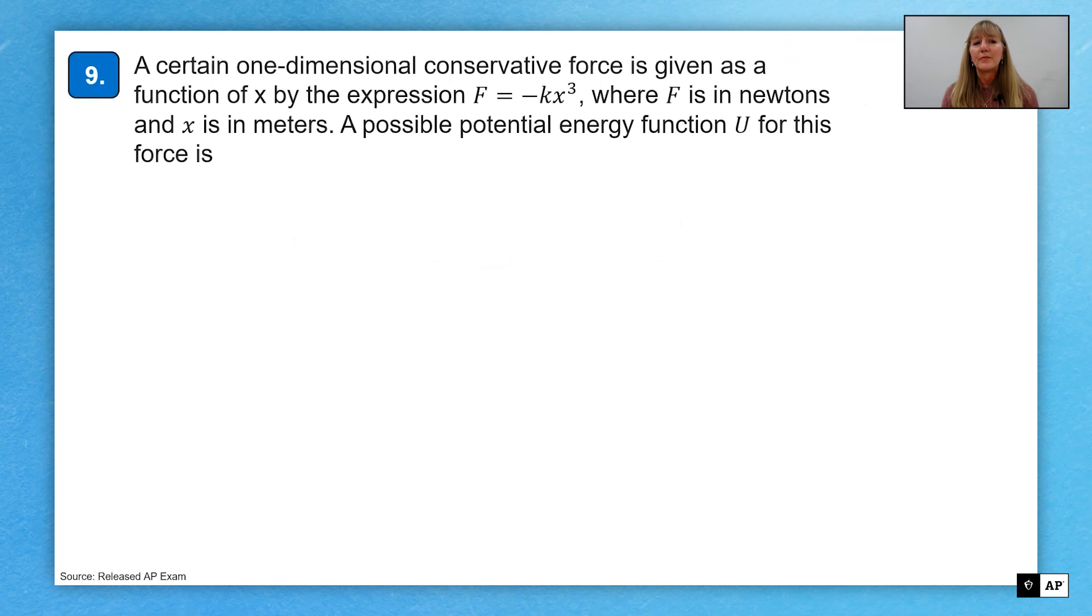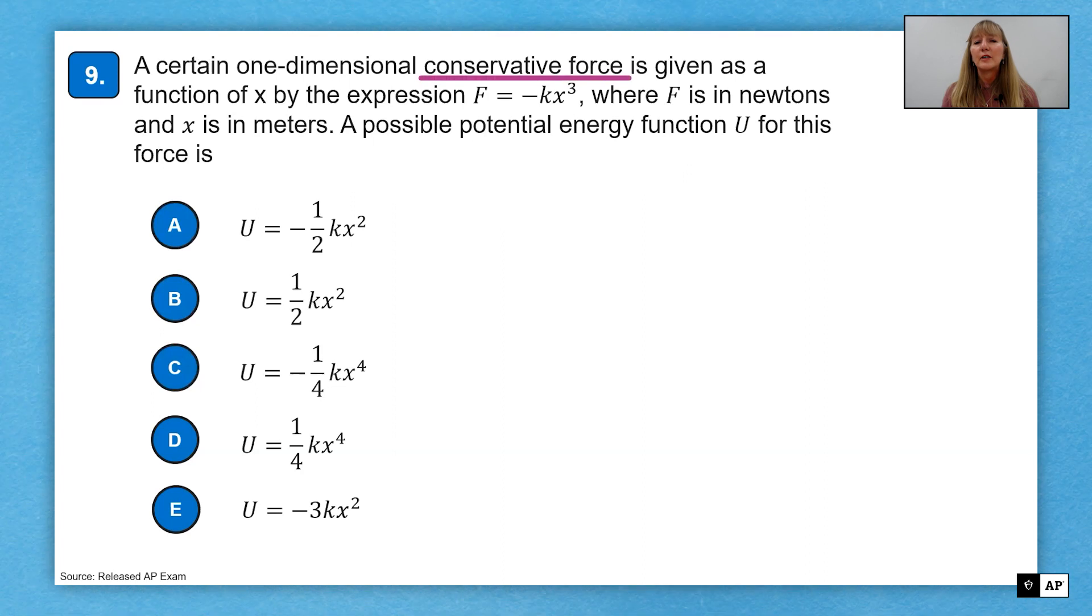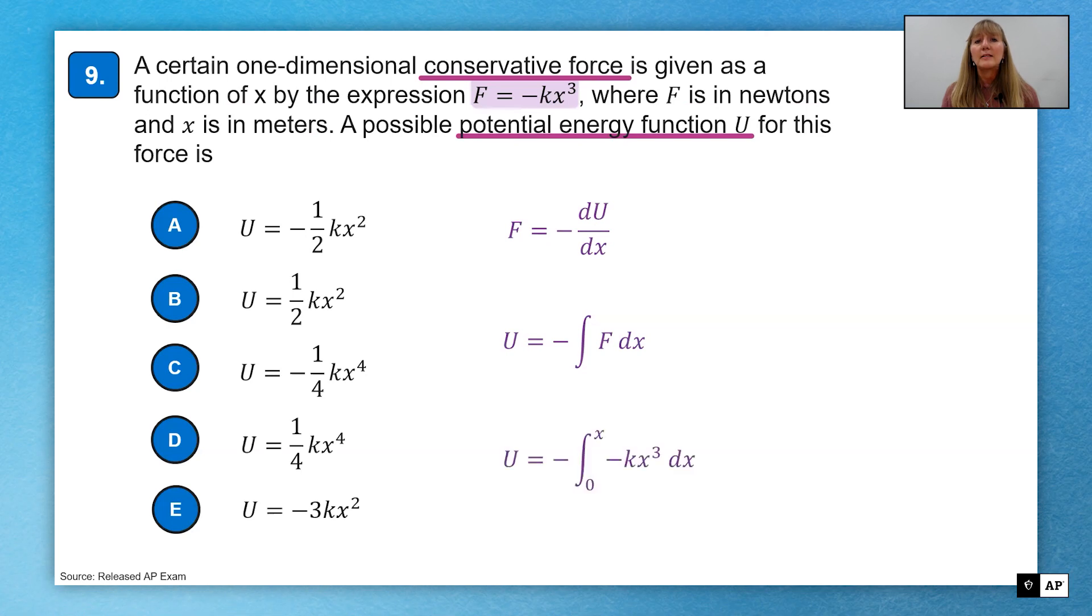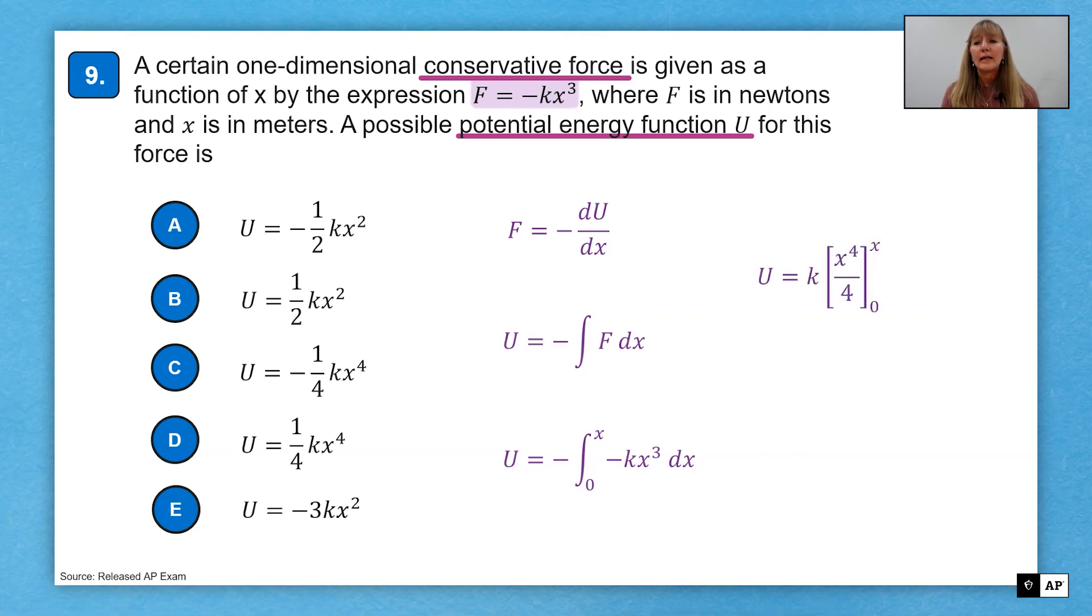New scenario. A certain one dimensional conservative force is given as a function of X by the expression F equals negative K X cubed, where F is in newtons and X is in meters. What we're asked to find is a possible potential energy function for the force. Because it's conservative, I know that force is the negative of the slope of a potential energy curve or negative of the derivative of potential energy with respect to X. Taking that equation and solving for potential energy, we get U equals negative integral F dX. I substitute in my expression for the force and I want to integrate from zero to X. That gets me X to the fourth over four, and when I evaluate with respect to my bounds, I get positive one fourth K X to the fourth, which is choice D.